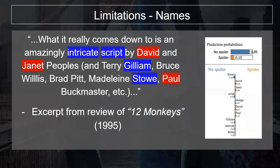However, our model has its own limitations. Look at this example: the name 'Janet' pushes the review toward being classified as a spoiler, while the name 'Stowe' does the opposite. These names are arbitrary to predicting any spoilers, but they affect our prediction probabilities significantly.